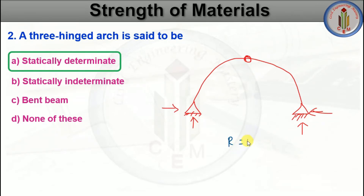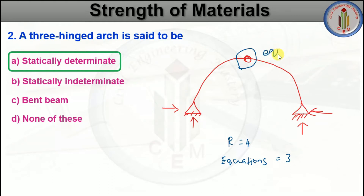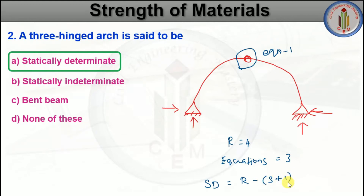Total reactions are 4. Equilibrium equations are 3, plus we get one additional equation due to the released reaction at the internal hinge at the crown, making total equations 4. Static determinacy equals number of reactions minus number of equilibrium equations: 4 minus 4 equals 0. Therefore, the three hinged arch is statically determinate because the number of equations and the number of reactions are the same.